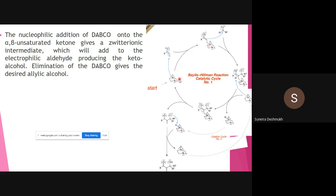First we did the 1,4-conjugate addition. Now we will do nucleophilic addition of this enolate across the carbonyl group of the aldehyde — this is a 1,2-direct addition onto the carbonyl. The negative charge shifts into the carbonyl group, then the negative charge shifts onto the carbon, and this nucleophilic carbon attacks across this carbonyl group. Don't underestimate the hydrogen atoms present on this carbon — they play a very important role.